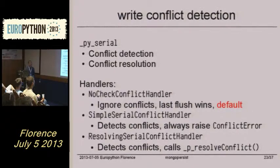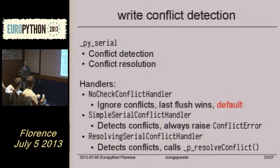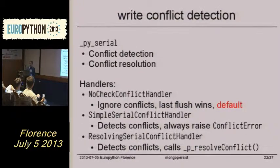So we added the _p_serial attribute, which is actually just a number which gets incremented on each change. This is good for conflict detection and conflict resolution.